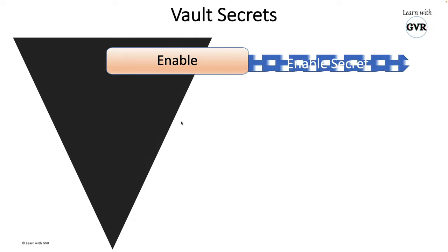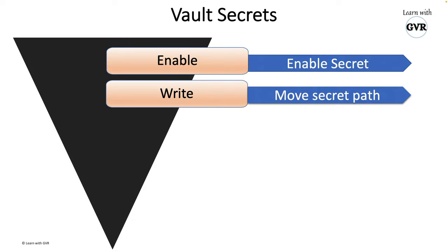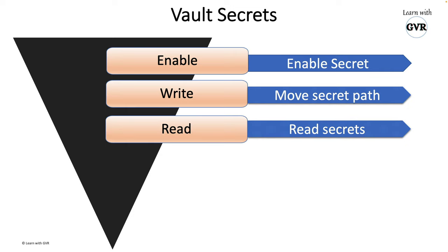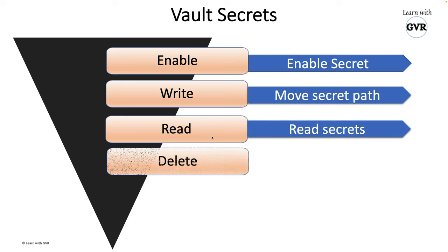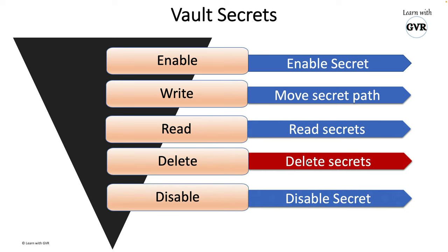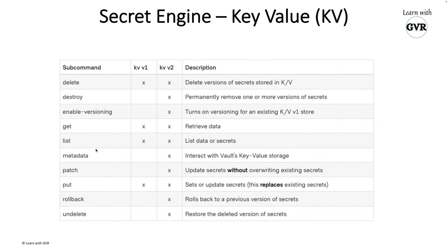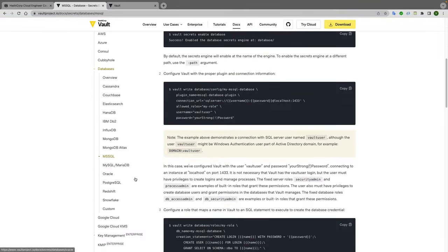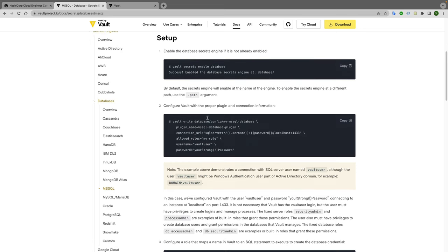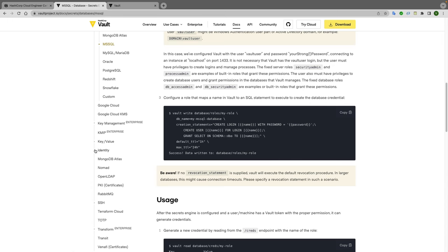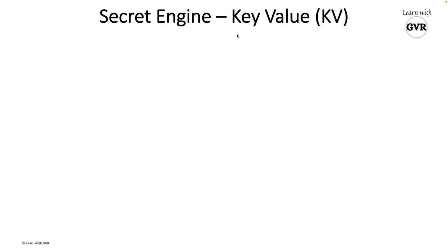From a Vault secret operations point of view: first you enable, second you write, third you read (without writing you can't read), then you can delete and disable. There are many other options like list, get, enable, disable, put, patch, rollback, and undelete. For example, with database credentials you can write them, modify them, delete them, and maintain versions.